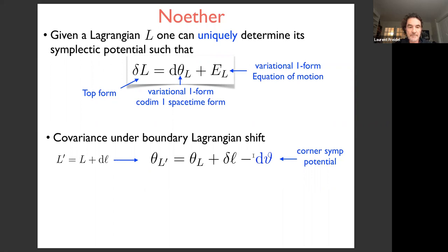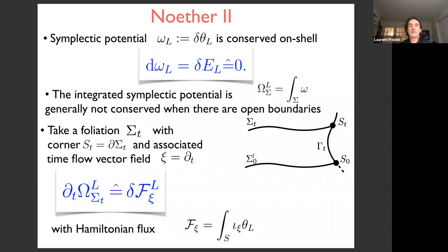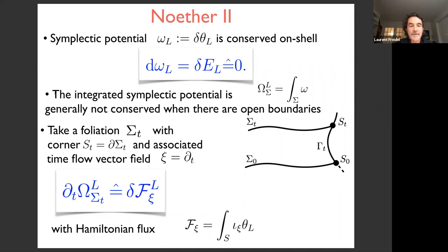The first law of Noether is that the symplectic form — obtained as the variation of the symplectic potential — is conserved on-shell, with its differential proportional to the equations of motion, vanishing on-shell. However, the integrated symplectic potential over a slice sigma is not generally conserved when there are open boundaries.